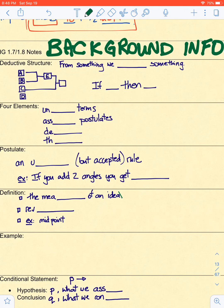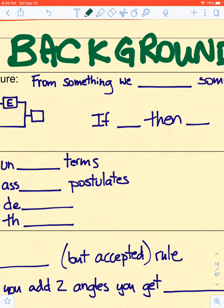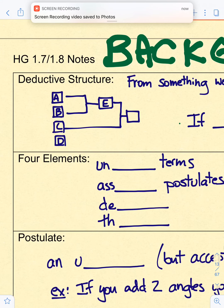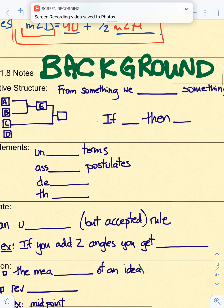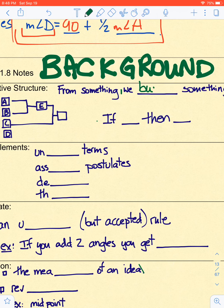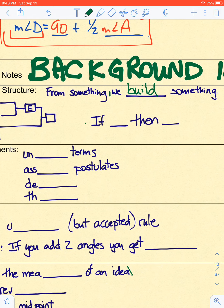All right, let's start off with our first term, deductive structure. What is that? A deductive structure is from something, we build something, right? So we're going to assume some things and then we build on top of those a larger structure. That's kind of the idea behind geometry and behind a lot of different disciplines.